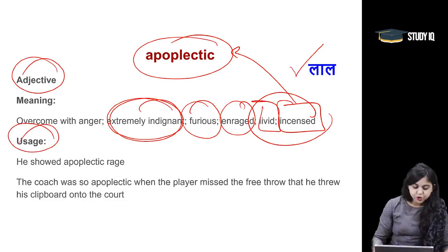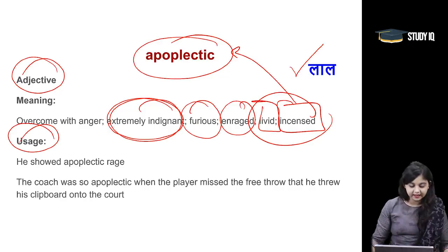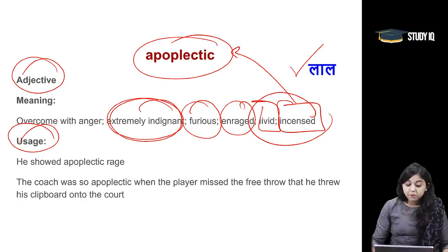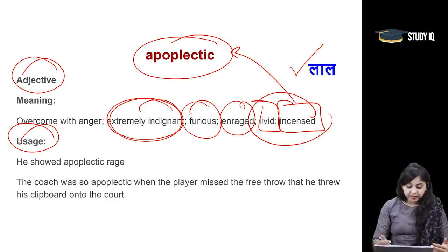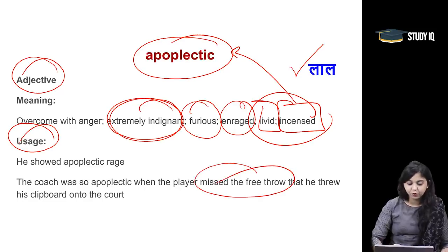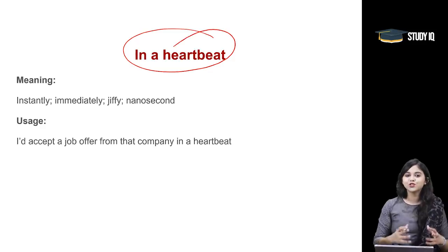Let's look at the usage. He showed apoplectic rage — showing extreme anger. The coach was so apoplectic when the player missed the free throw that he threw his clipboard onto the court. That means the coach was very angry when the player could not make use of that free throw. Apoplectic — to become red with rage.